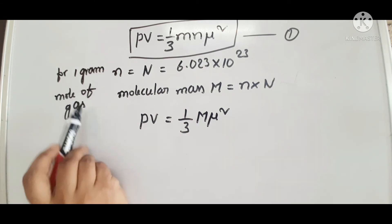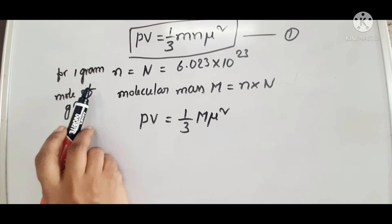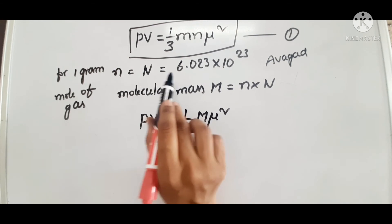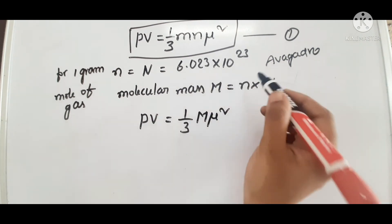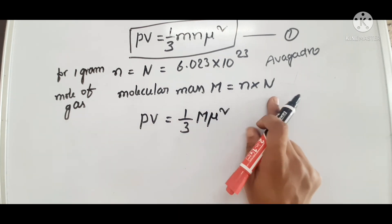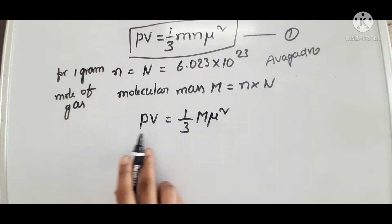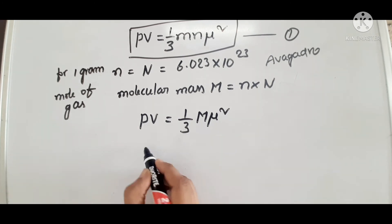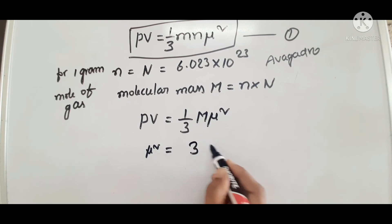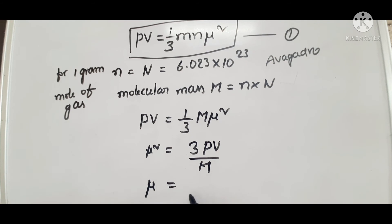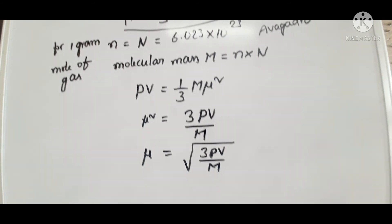To calculate the speed mu of that gas molecule from this equation: for 1 gram mole of gas, N equals Avogadro number (6.023 × 10²³). Molecular mass M equals number of molecules times Avogadro number. This equation can be rewritten as PV equals 1 by 3 M mu squared, so mu squared equals 3PV by M, and therefore mu equals square root of 3PV by M.